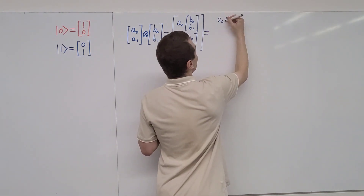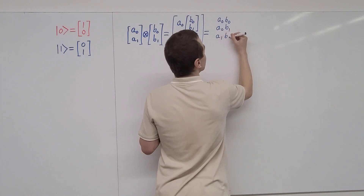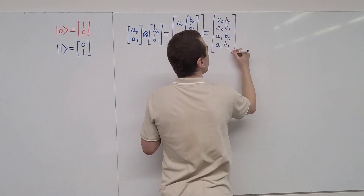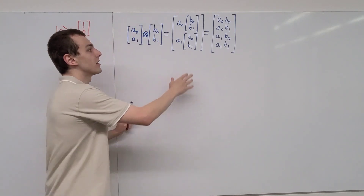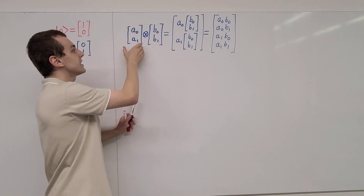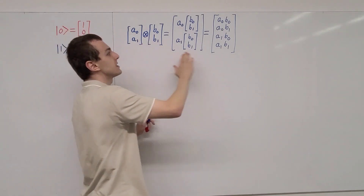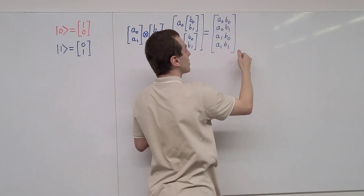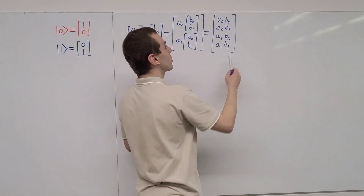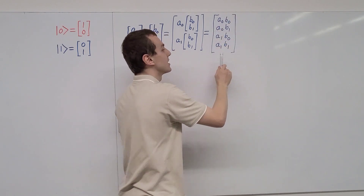This gives us a column vector with four entries: a0·b0, then a0·b1, then a1·b0, and finally a1·b1. This is how to generally compute the tensor product of two column vectors, each living in a two-dimensional Hilbert space — one describing a single qubit and another describing a single qubit. The result is a column vector with four entries. We can label these entries as the 00, 01, 10, and 11 terms.